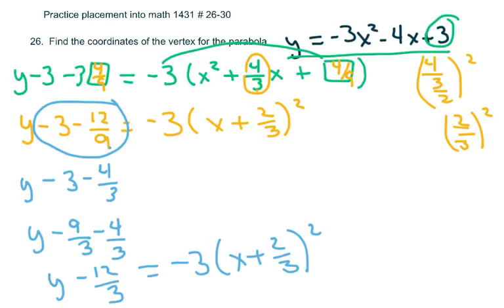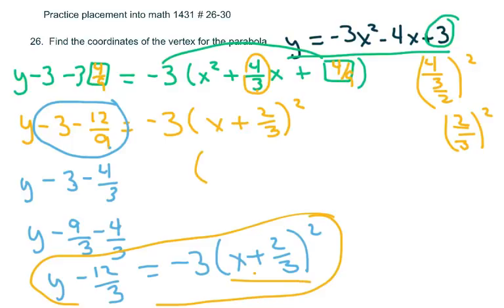So I'm going to rewrite this as y minus 9 over 3 minus 4 over 3. So this will be y minus 12 over 3 equals negative 3 x plus 2 thirds squared. So basically, when it's in this form, your vertex is just going to be the opposite, because this is the distance. So, the vertex is negative 2 thirds, comma positive 12 thirds, which is what? Actually, 12 thirds is 4. So we can put that as 4.